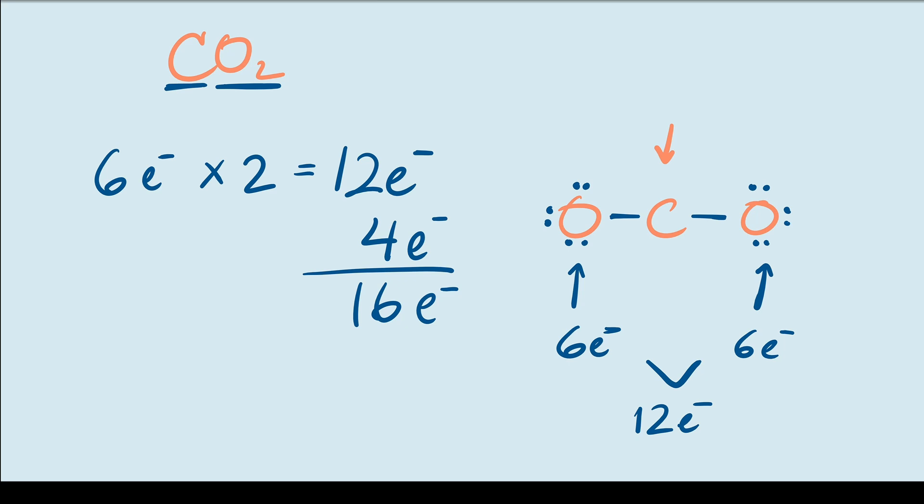I'll remove a lone pair from this oxygen atom right here and I'll convert it into a bond. This gives the central carbon atom another pair of electrons, but it hasn't taken any of the electrons away from the oxygen atom that it needed for its octet.